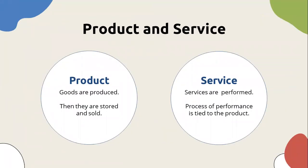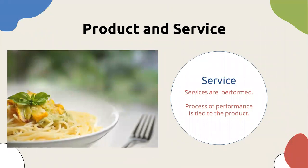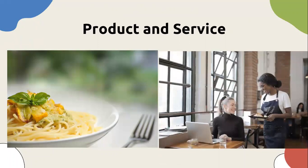When we say product, goods are produced and services are performed. Goods are stored and sold. With services, the process of performance is tied to the product. This is a product, and this is an example of service.